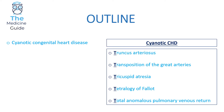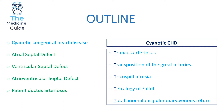Top tip: cyanotic congenital heart diseases are usually caused by conditions beginning with the letter T — Truncus Arteriosus, Transposition of the Great Arteries, Tricuspid Atresia, Tetralogy of Fallot, and Total Anomalous Pulmonary Venous Return.